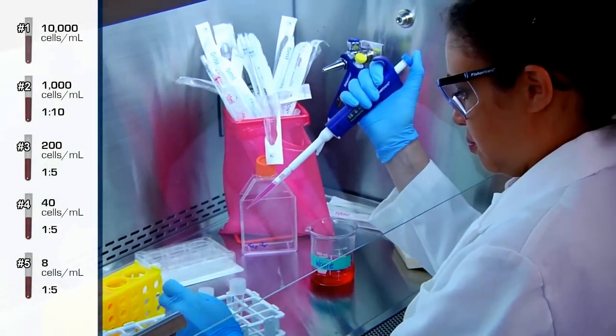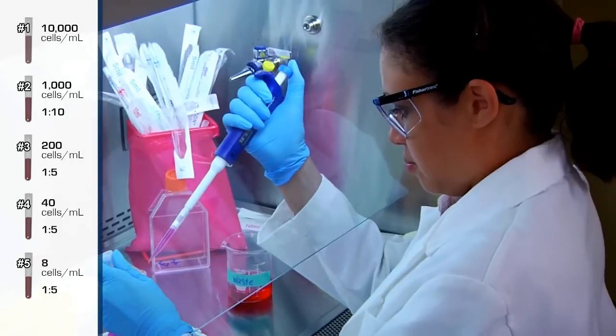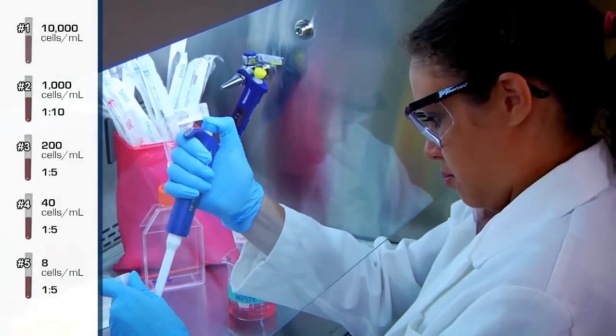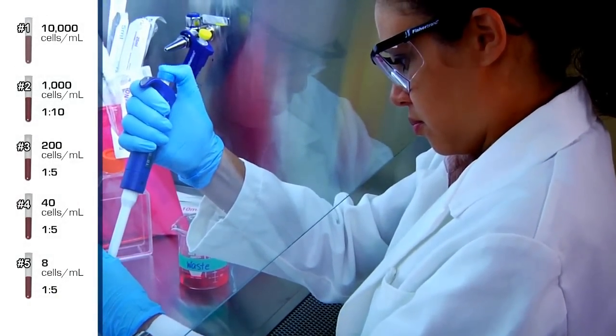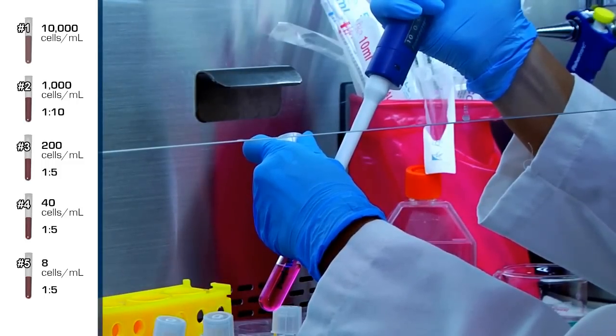Transfer 1 milliliter from tube number 3 to tube number 4 for a 1 to 5 dilution. The concentration of tube number 4 is now 40 cells per milliliter.